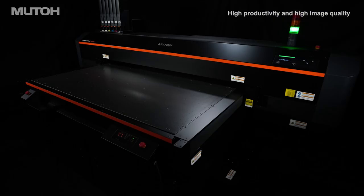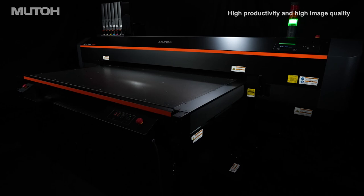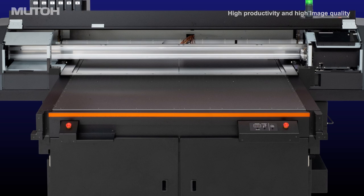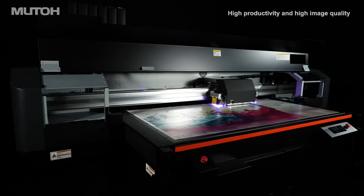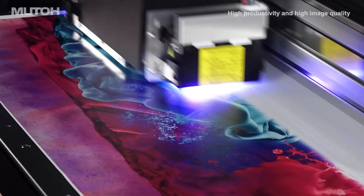The highly rigid and precise chassis and adjustment of MUTO's unique aluminum rail mechanism deliver high dot placement accuracy. It enables stable and high quality printing.